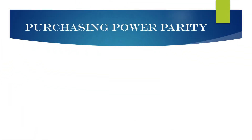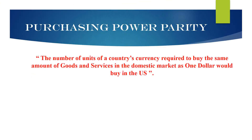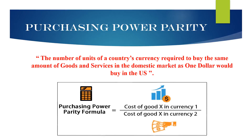Purchasing Power Parity (PPP) is defined as the number of units of a country's currency required to buy the same amount of goods and services in the domestic market as $1 would buy in the U.S. So, purchasing power parity equals the cost of a product in currency 1 divided by the cost of the same goods in currency 2.